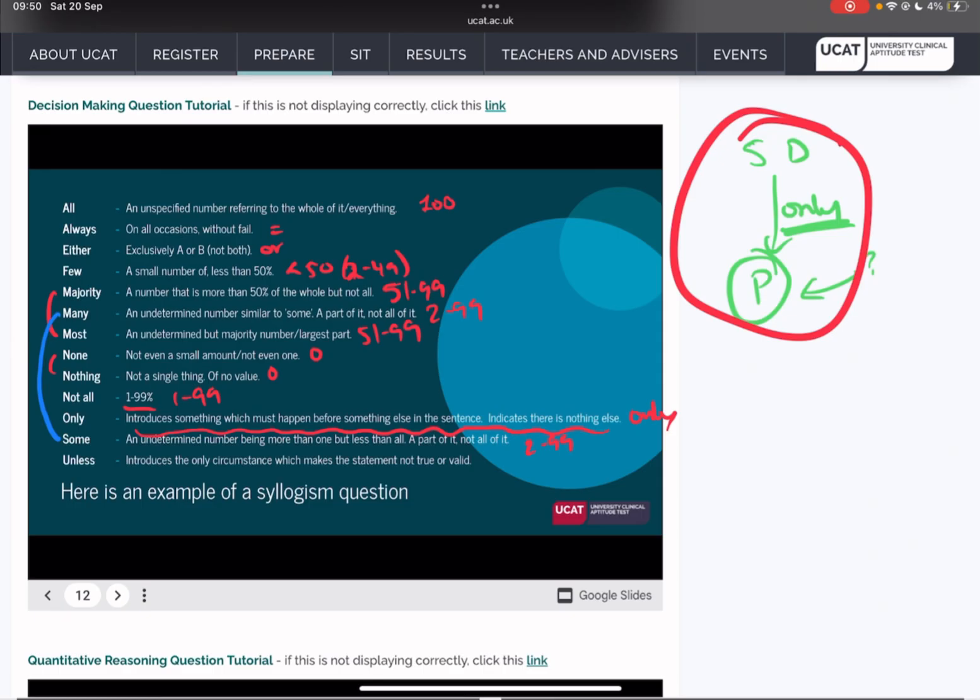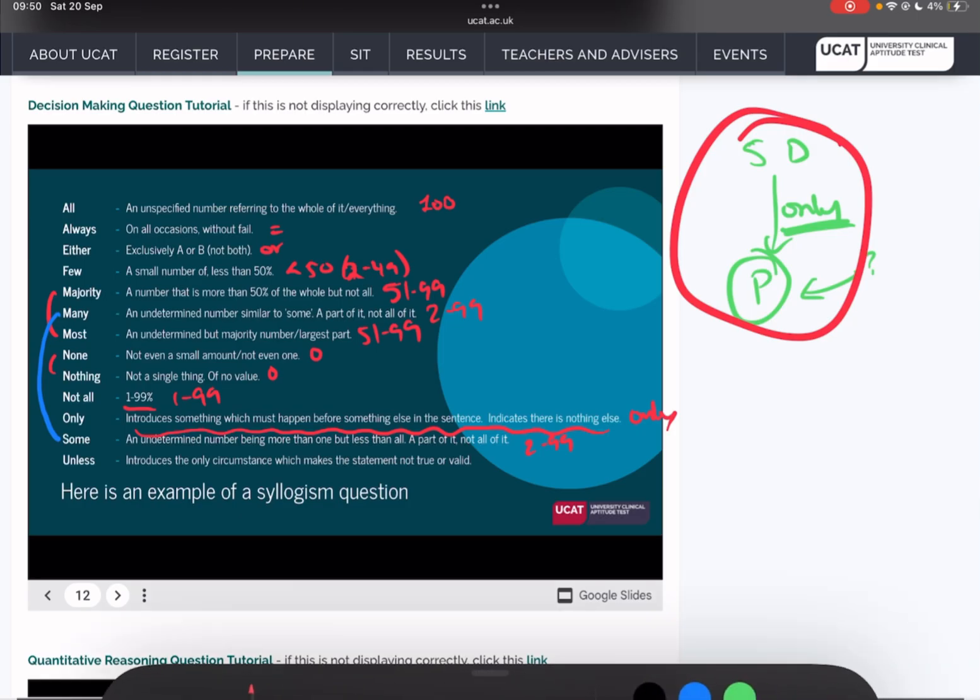Unless introduces the only circumstance which makes the statement not true or valid. I don't really see many unless questions, I'll be honest. One thing you can write is like except or something. For example, if I said that all footballers are well paid unless they are called George, then this is the way that I like to do it. Minus George. So everyone but George, or unless they are playing as a defender, then you can put minus defender. The way that I think about it is arrow means all, so all footballers are well paid, but minus defender, except for defenders.